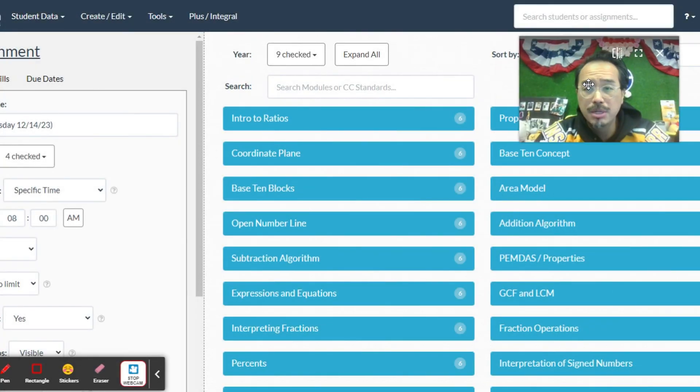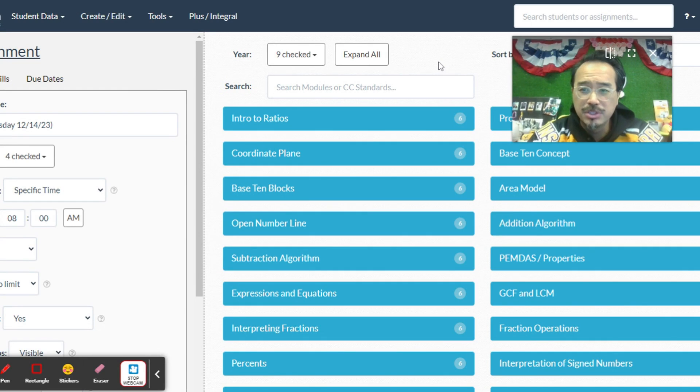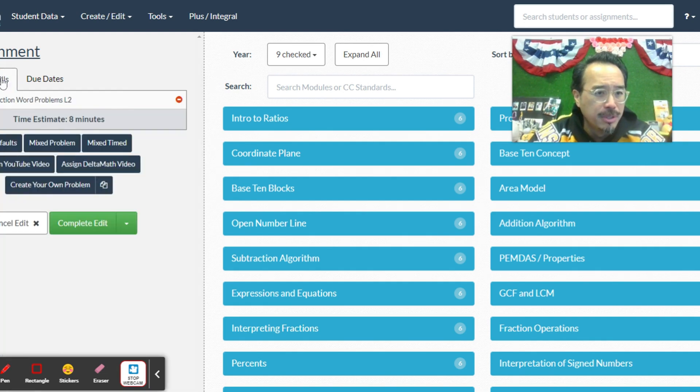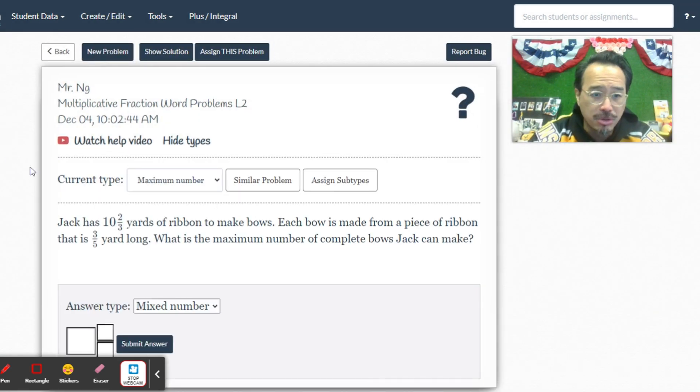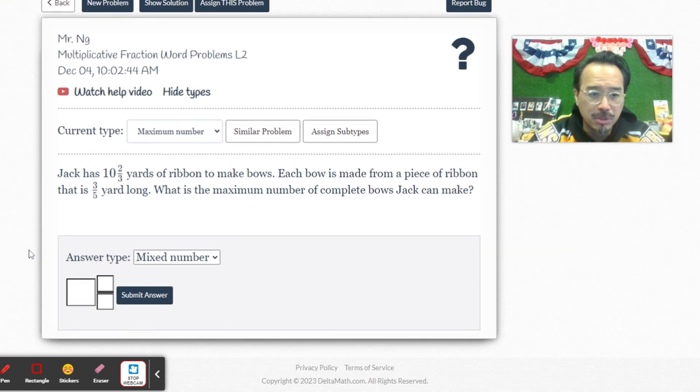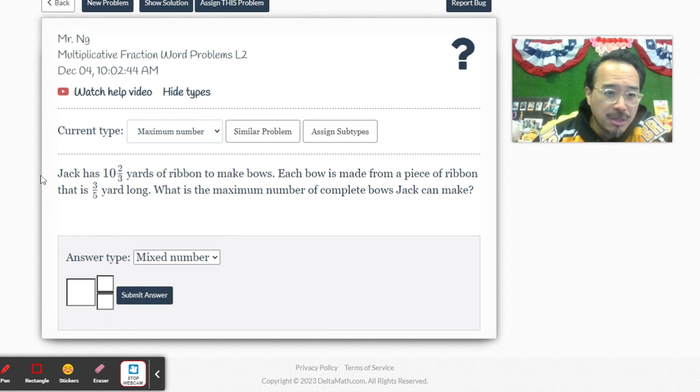Okay, so tonight's homework is number 40 for Thursday, December 14th. Now tonight's question is a little bit more unique because they're not looking for the exact answer. These are called maximum number questions.